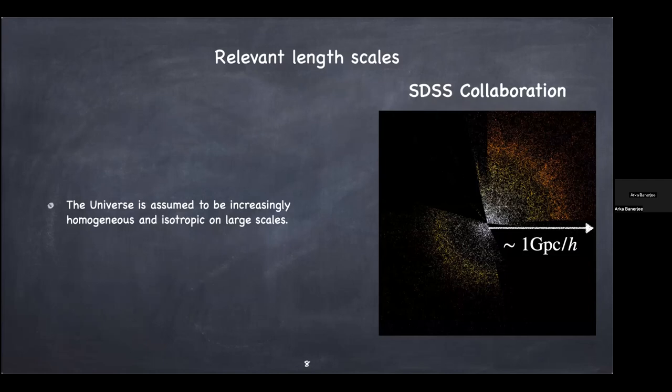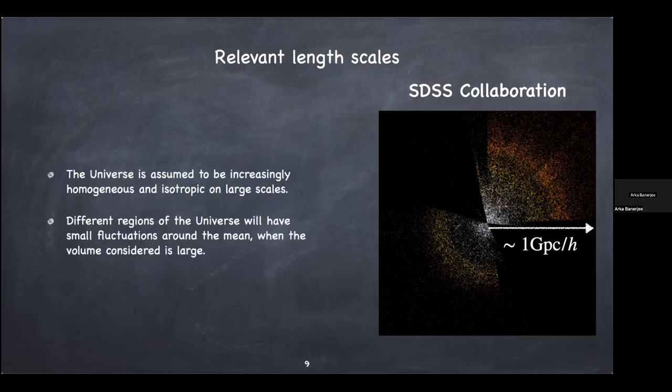On these scales, you'll notice that the universe — or the distribution of galaxies, which we take as a proxy — is largely homogeneous and isotropic. If I drew large circles in this picture, I would find roughly the same number of galaxies in each. So on very large scales, the universe is homogeneous and isotropic. Different regions will have small fluctuations around the mean, but they'll be roughly the same — small deviations.